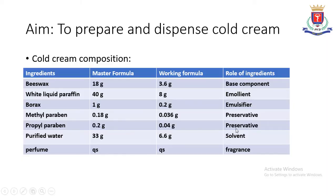Now we will see the composition of this cold cream. It usually contains beeswax, which is a base component, and white liquid paraffin, which has an emollient property. An emollient gives an oily texture to the formulation and when applied to the skin it provides moisture and forms a layer on the skin, preventing the loss of moisture.